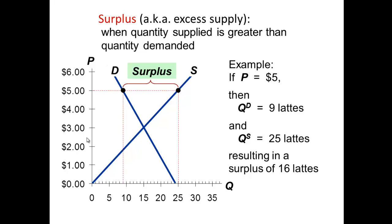Let's look at surplus or excess supply. The equilibrium price is $3 and the equilibrium quantity is 15. So if we're still talking through our example of lattes, a cup of latte — the equilibrium or market price would be $3. And at that point, the coffee shops, Starbucks and Jitters, would sell 15. And there would be 15 customers that would want to buy the lattes.